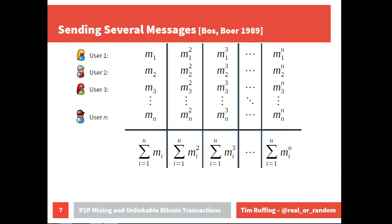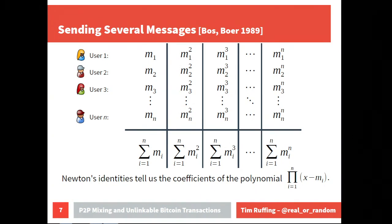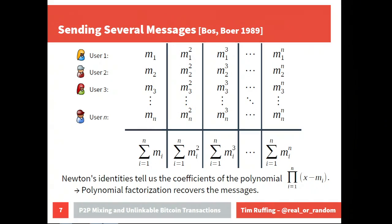The result is a set of power sums. Newton's identities tell us how to compute the coefficients of the polynomial that has the messages as roots, given those power sums. So from the power sums we compute the coefficients, then factor the polynomial — and the roots of that polynomial are the original messages. We recover the full list of messages, now in anonymized order.